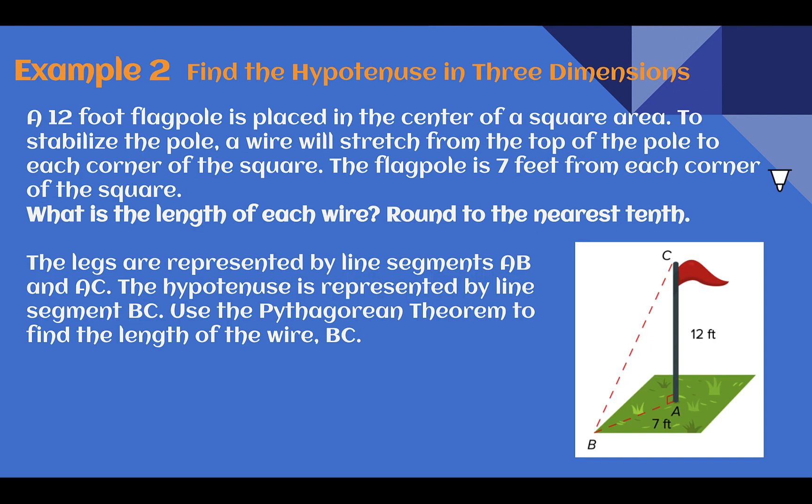Example 2. Find the hypotenuse in three dimensions. A 12-foot flagpole is placed in the center of a square area. To stabilize the pole, a wire will stretch from the top of the pole to each corner of the square. The flagpole is 7 feet from each corner of the square. What is the length of each wire round to the nearest tenth? So in the picture here, the legs are represented by line segments AB, so along the bottom here, and AC, which is the height of the flagpole. The hypotenuse is our support wire from B to C. We can use the Pythagorean theorem to find our support wires.